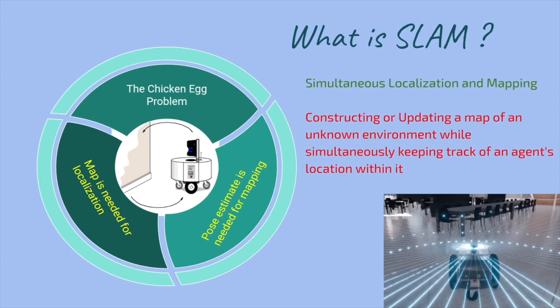Let's answer the question: what is SLAM? SLAM is simultaneous localization and mapping. This method is used by autonomous systems to build a map and localize simultaneously. This is a chicken-and-egg problem because to estimate pose we need a map, and to build a map we need to estimate our pose.